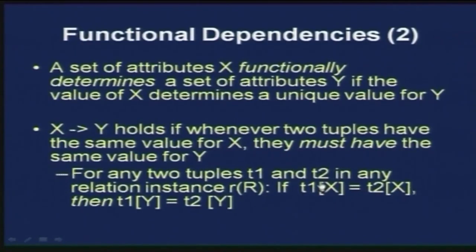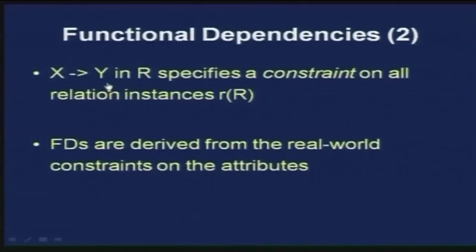X functionally determines Y holds if whenever two tuples have the same value for X, they must have the same value for Y. If two tuples t1 and t2 have the same X value, it is necessary that the two tuples have the same Y value. X functionally dependent on Y in R specifies a constraint on all relation instances. Functional dependencies are derived from the real-world constraints on the attributes — for example, entity constraints like employee number determining employee name, or application constraints like one employee working in only one department.